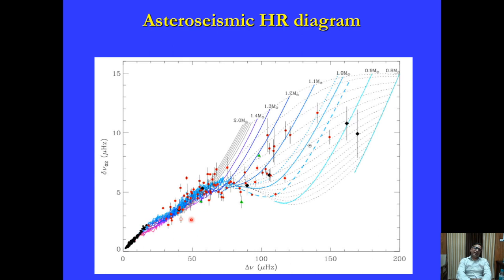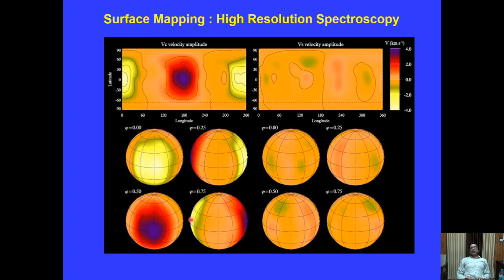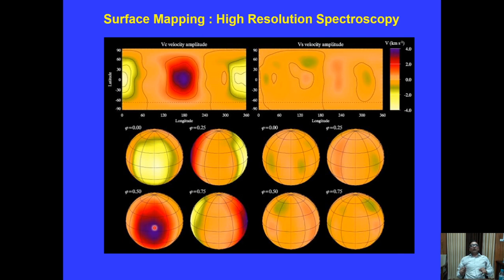Using Doppler spectroscopy (Doppler imaging), one can also image the surface of stars for any inhomogeneities, such as spots. If both pulsation and rotation are present, this makes the star's signal complex but allows very accurate mapping of the stellar surface using these oscillations.